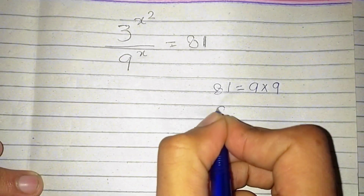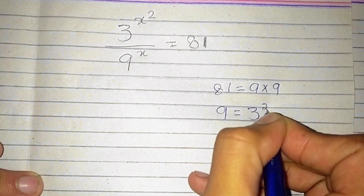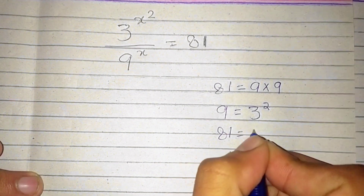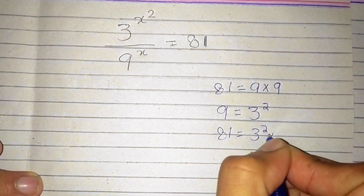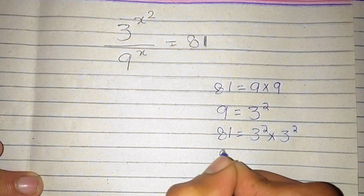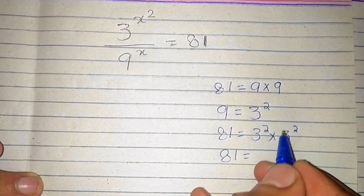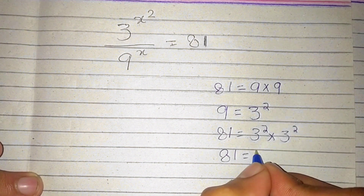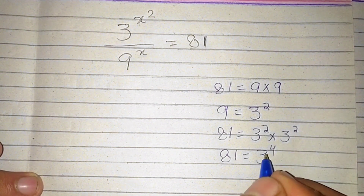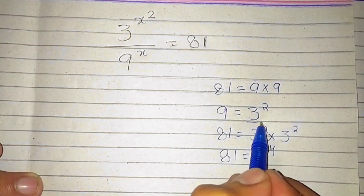And 9 is equal to 3 squared. So 81 becomes 3 squared multiplied by 3 squared. We have the same base, so we can add the exponents, and it becomes 3 power 4.